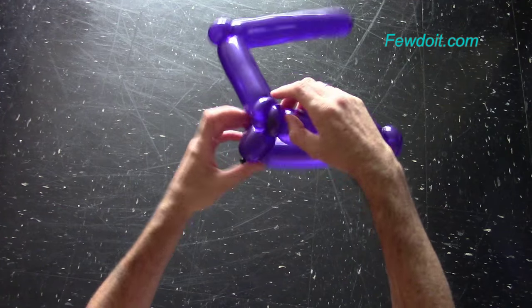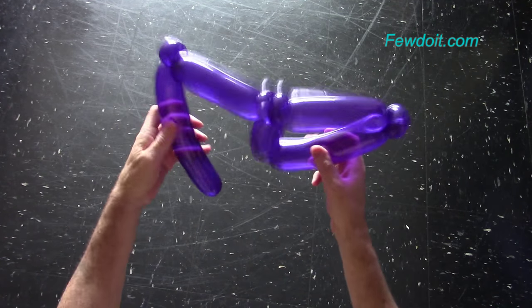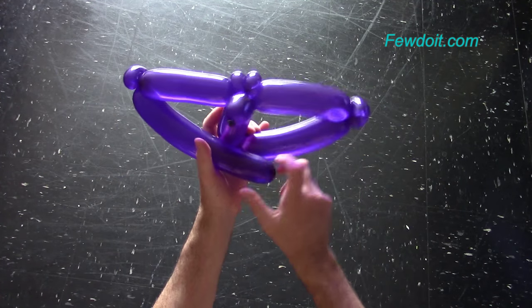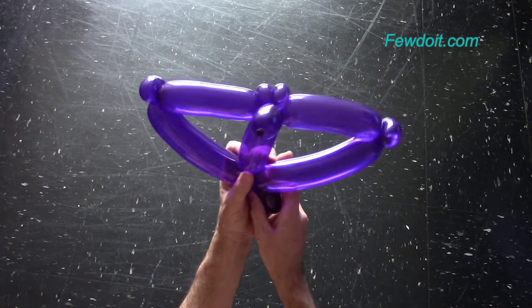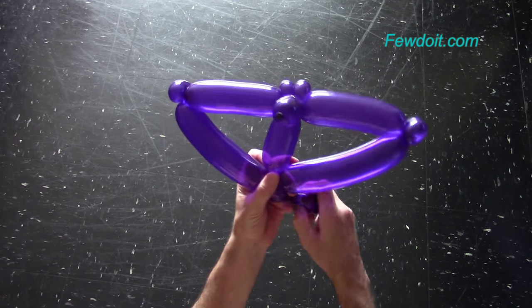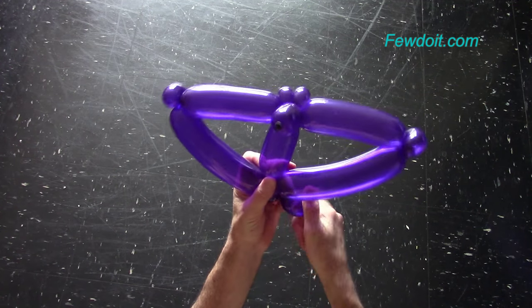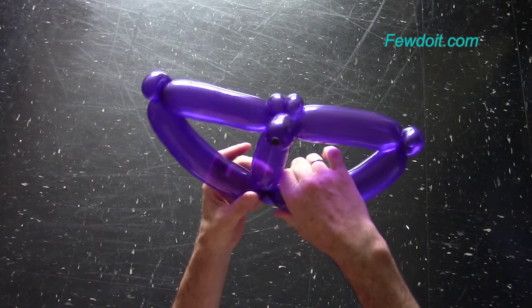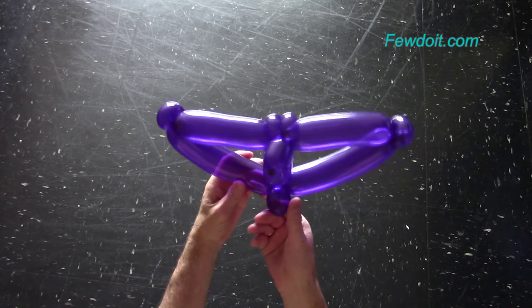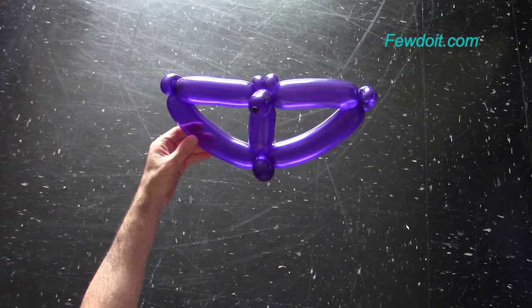Now we have to twist the tenth bubble of the same size as we made the sixth bubble. In this example I made the sixth and tenth bubble about 20 cm long. Make sure to leave about 5 cm long bubble at the end of the balloon. Lock both ends of the chain of the last four bubbles in one lock twist.